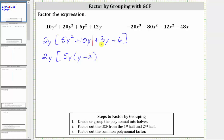Now we do the same to the second half. The greatest common factor of 3y plus 6 is 3. Because we factor out positive 3, we write plus 3. Factoring out 3 from 3y leaves us with y, and from 6 leaves us with 2, giving us plus 2. The last step is to factor out the common polynomial factor. If we use factor by grouping correctly, the products will always have a common polynomial factor, which in this case is y plus 2.